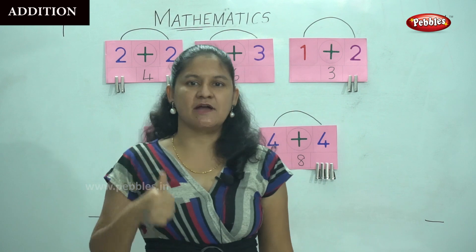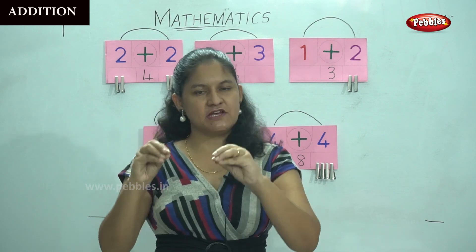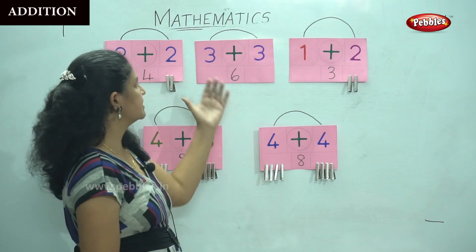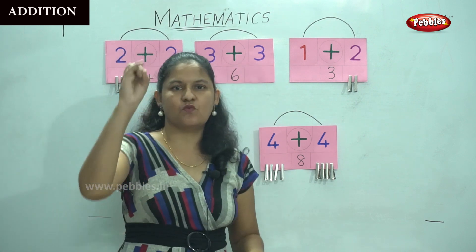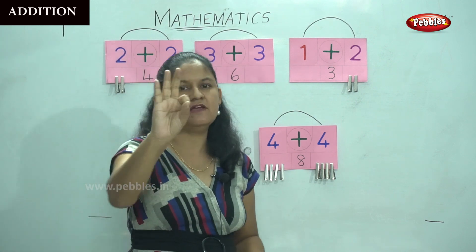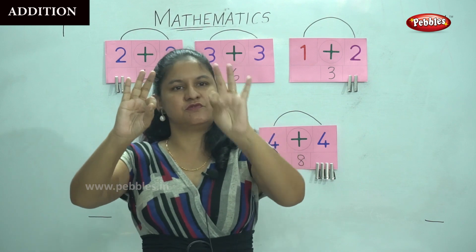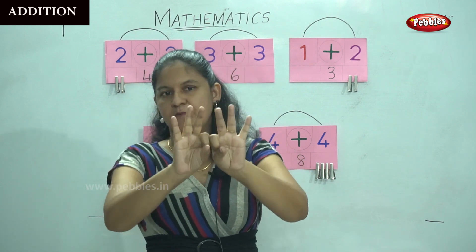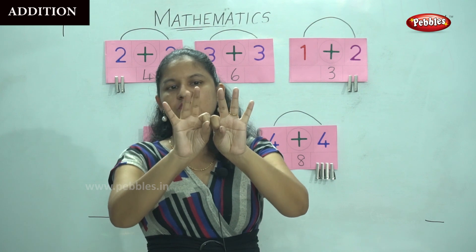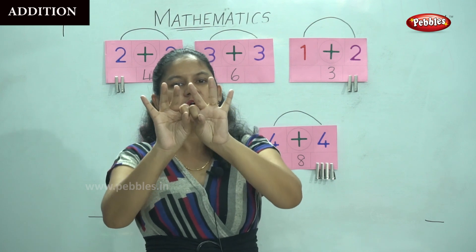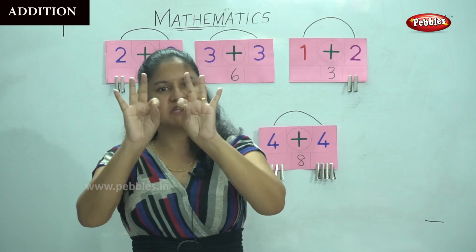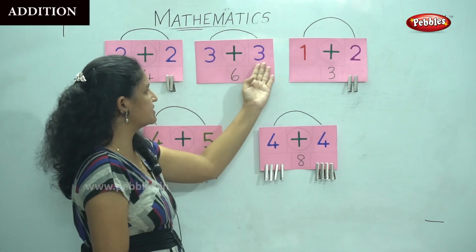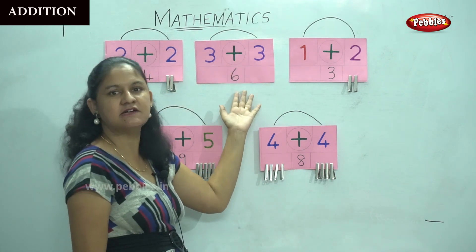The next is three plus three. So one, two, three and one, two, three. I am going to count all the fingers that are up — one, two, three, four, five, six — which gives me the answer six. Three plus three gives me the answer six.